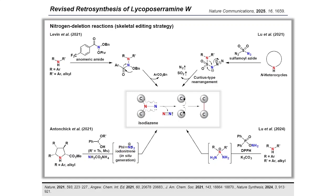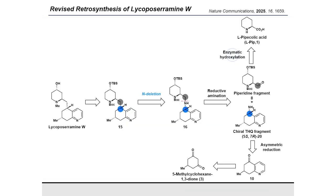Finally, Antonchik and co-workers utilized phenyl nitrene, formed in situ from a hypervalent iodine reagent and ammonium carbonate, and reported nitrogen deletion reactions of substituted piperidine esters. Importantly, some of these reactions have been reported to proceed in a stereospecific manner and maintain the stereochemistry of the nitrogen deletion precursor.